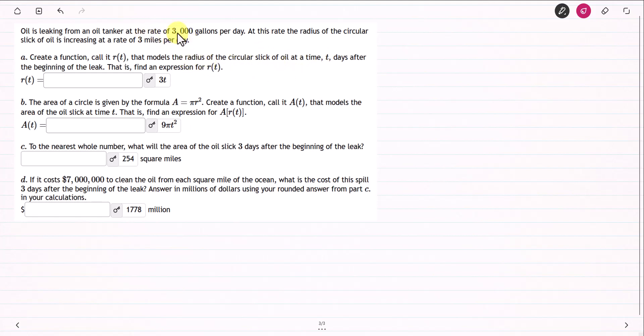Go back to the statement of the problem. It says the radius of the circular slick of oil is increasing at the rate of 3 miles per day. So every single day, it is increasing by 3 more miles. We have the same rate of change from this day to the next day. So this is a linear function.